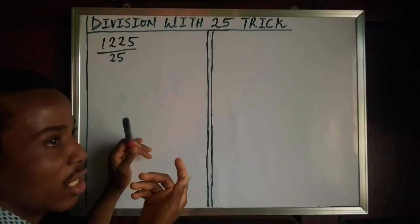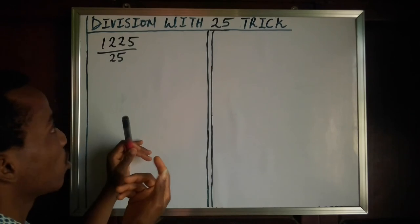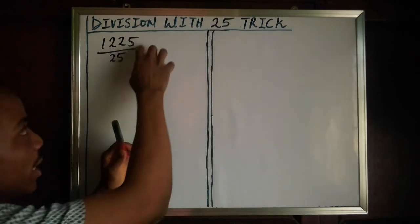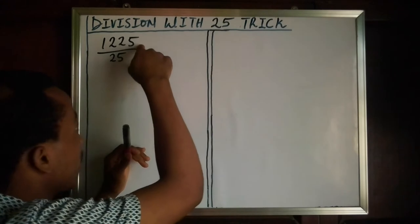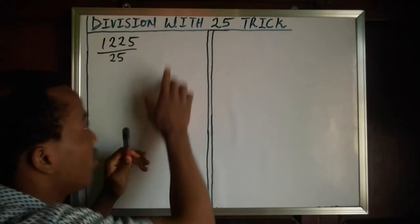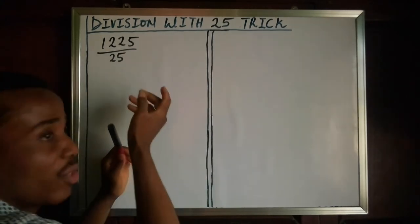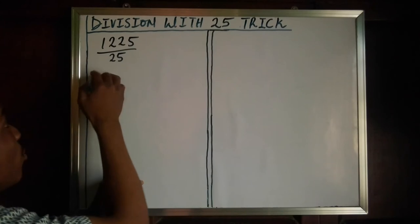So what you need to do is just multiply the numerator by 4 and divide by 100. It gives you the answer straight. So what you simply need to do is take...